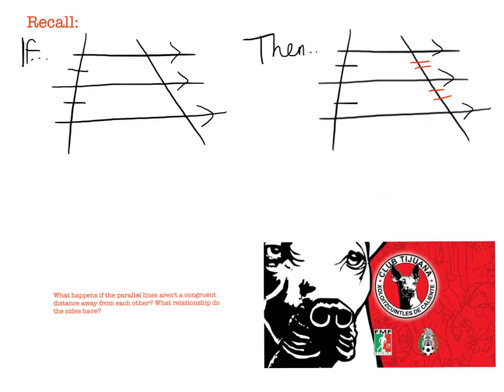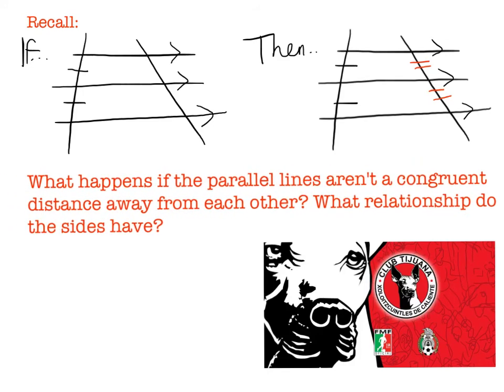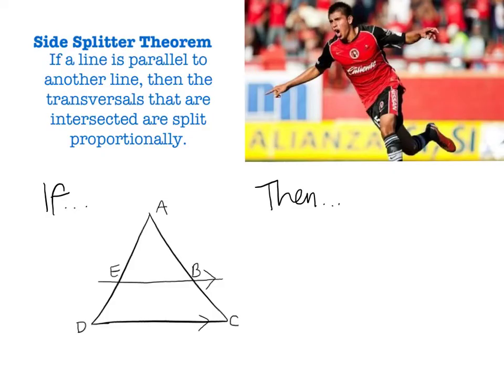The question though is, what happens if the parallel lines aren't a congruent distance away from each other? What relationship do the sides have? In other words, suppose these parallel lines, let's say these were 8 feet apart. Suppose this was 8 feet, and this was 10 feet. What would that mean for these red lines here? What would the relationship be between those two lines? The answer to that question is the side splitter theorem.